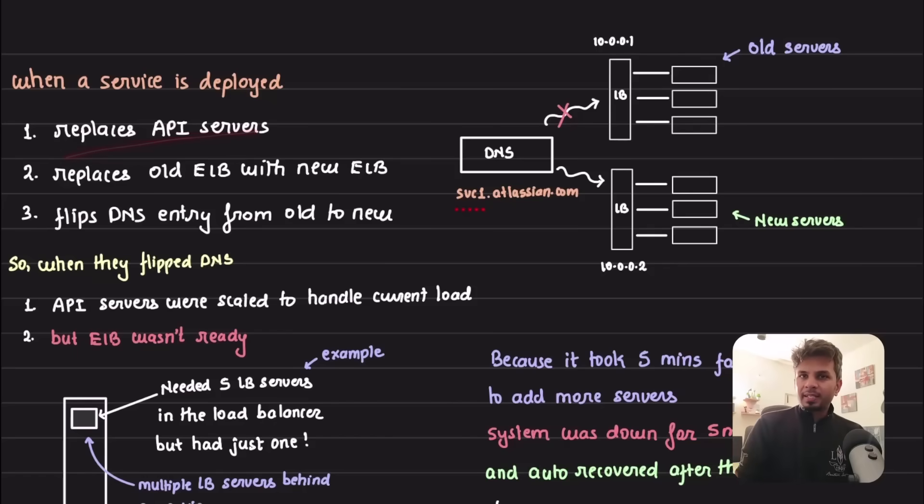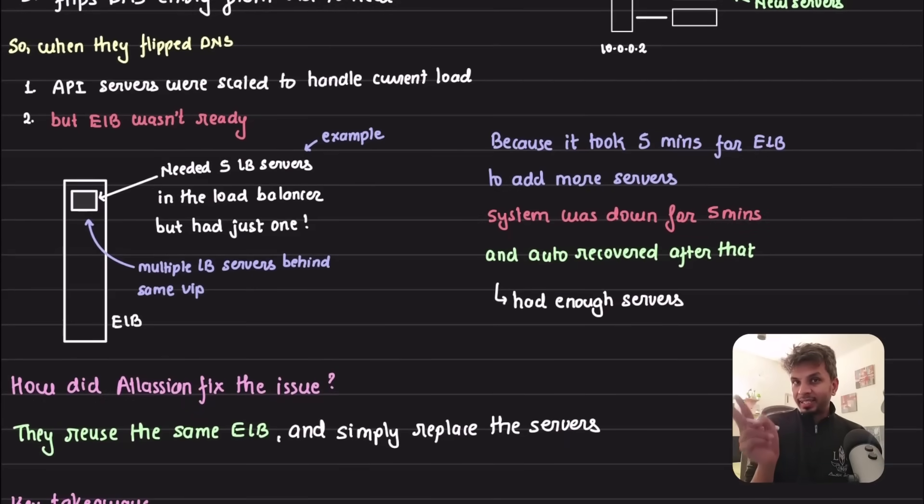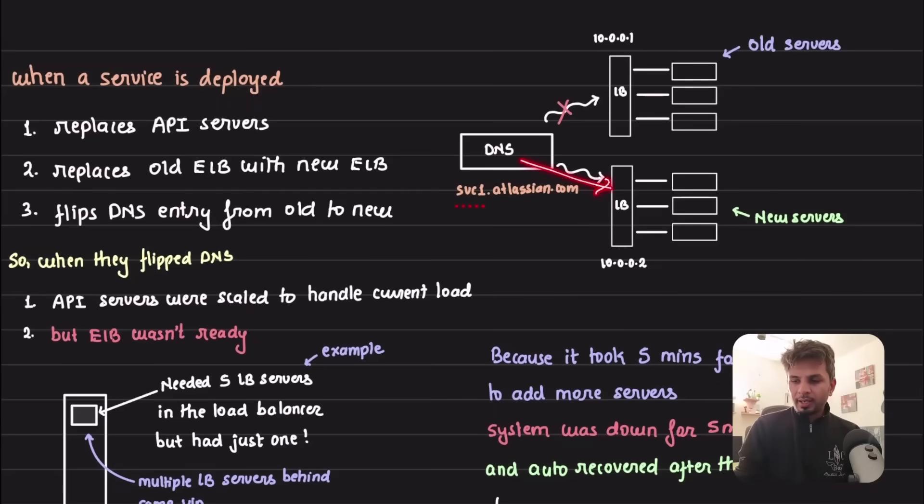When they deploy a new change, they had a kind of blue-green deployment. When a service is deployed, they replace the API servers, create new API servers with the new version of the code and deprecate the old API servers. Interestingly, they also replace the old ELB with a new ELB. Then they flip the DNS entry - so the DNS entry flips from load balancer one to load balancer two. This way the requests would start coming to the newer infrastructure.